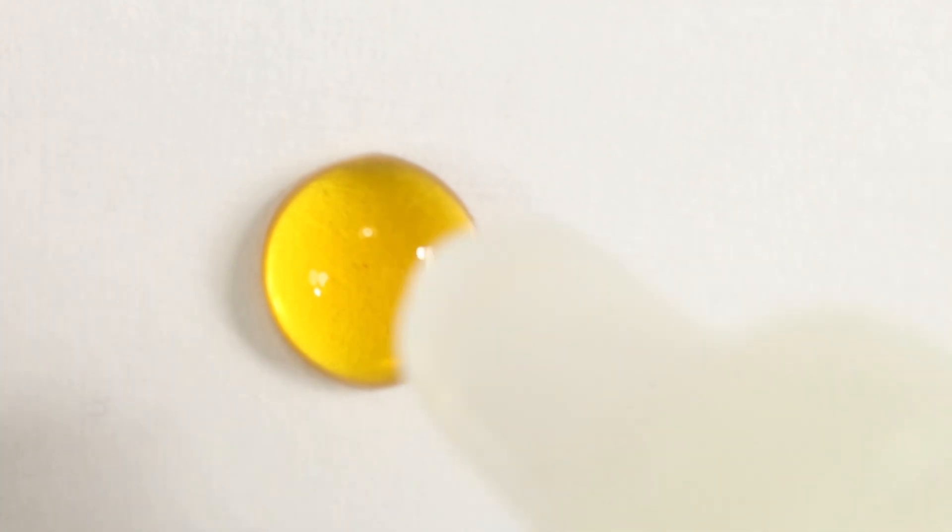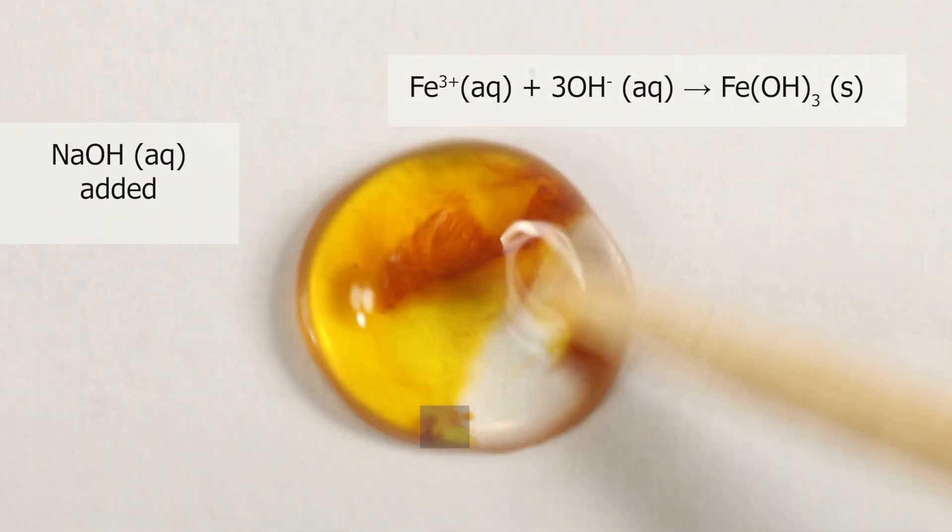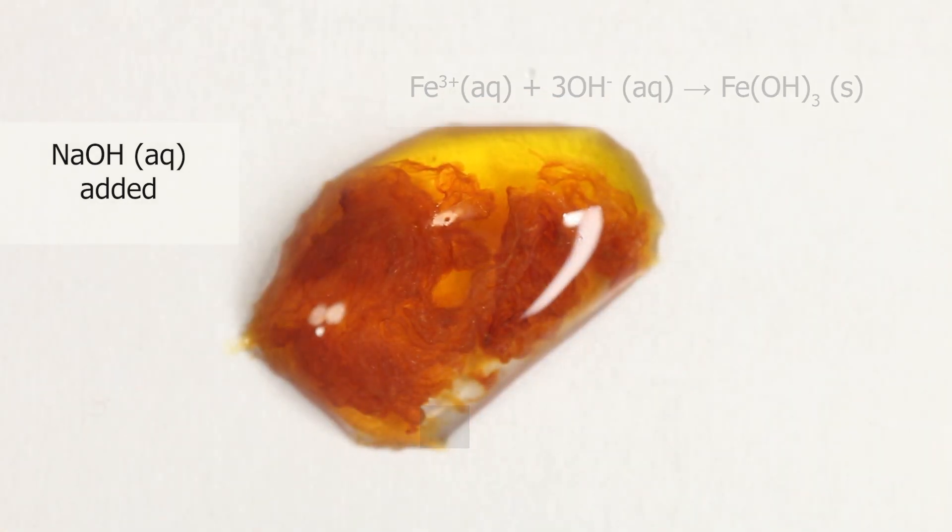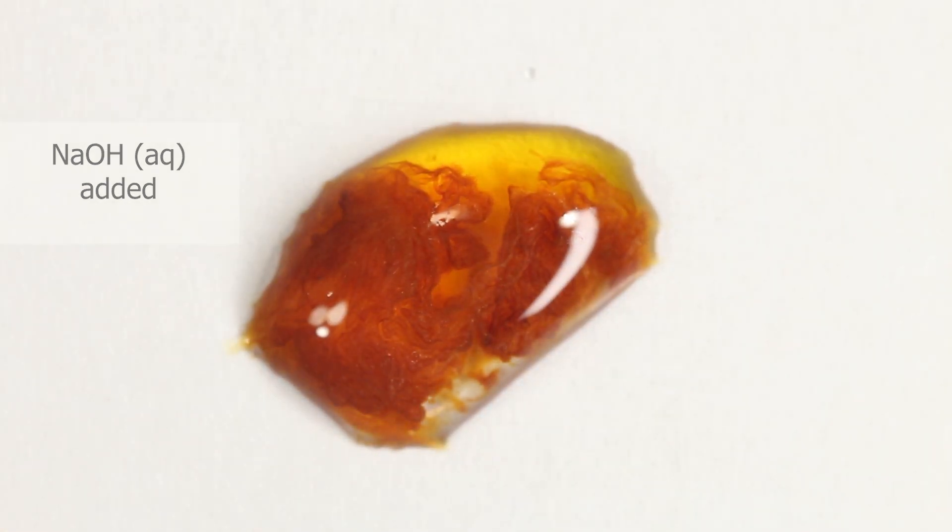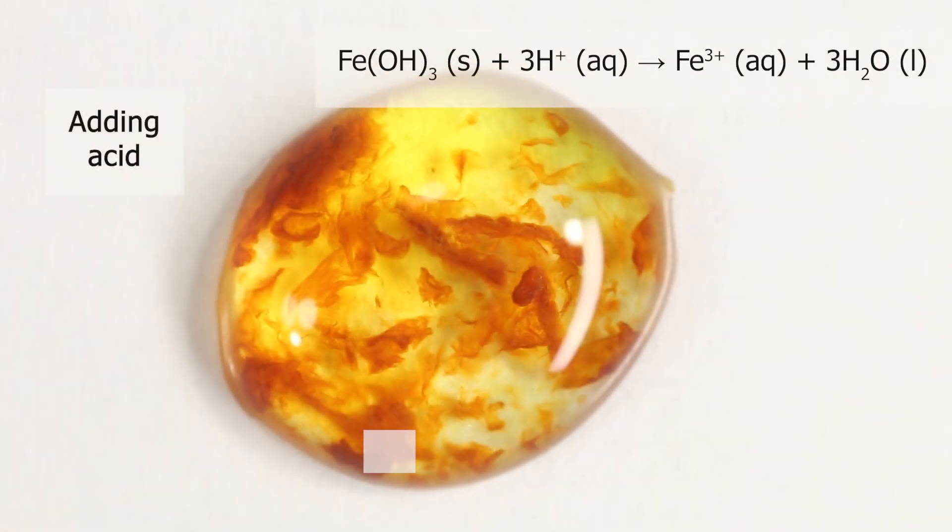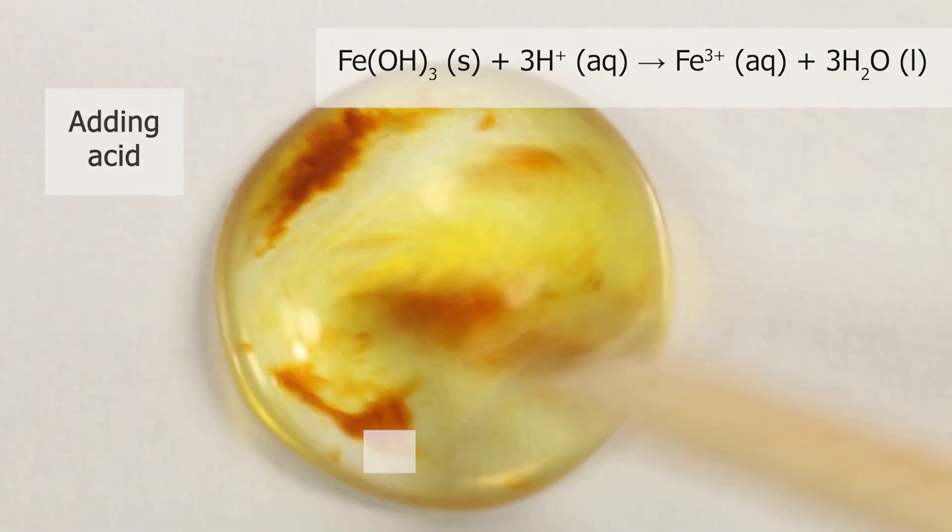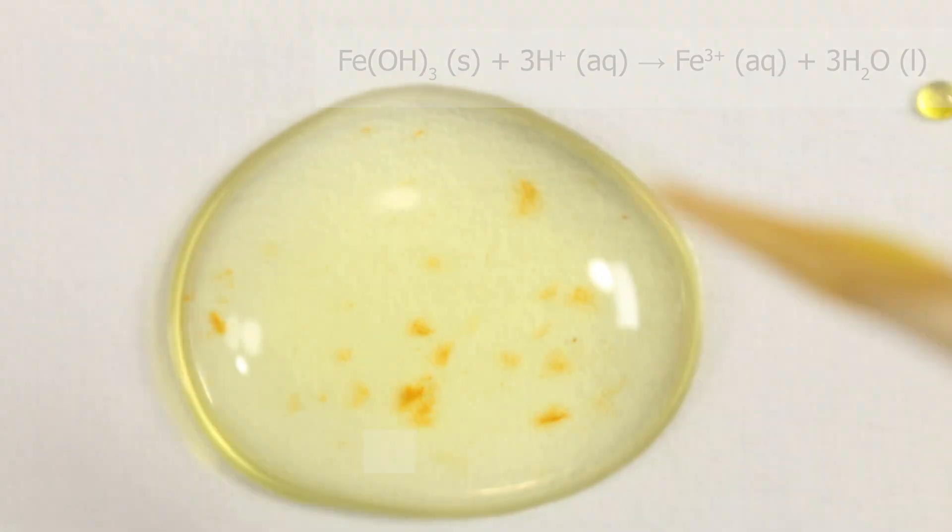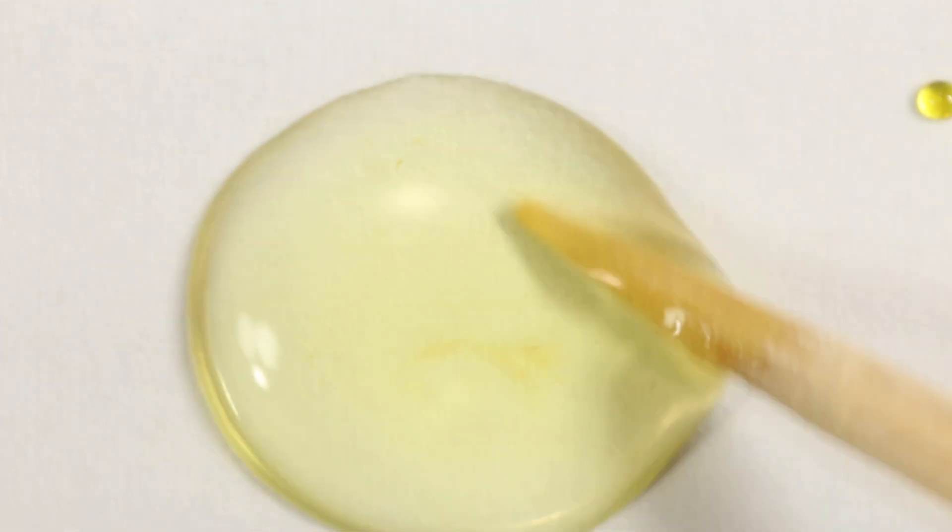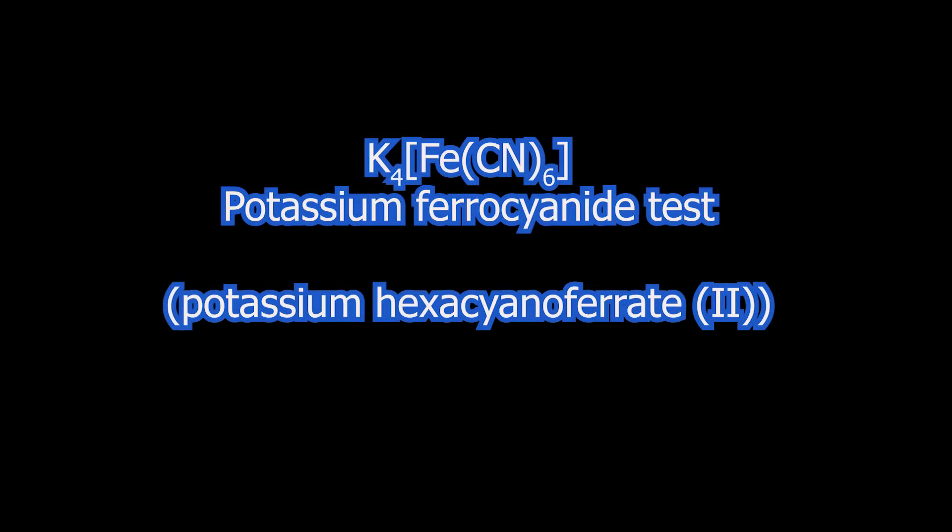The same thing on micro scale. Iron-3 chloride and sodium hydroxide. Brown gelatinous precipitate which redissolves on addition of an acid. Typical iron-3 hydroxide. Now let's look at another test.